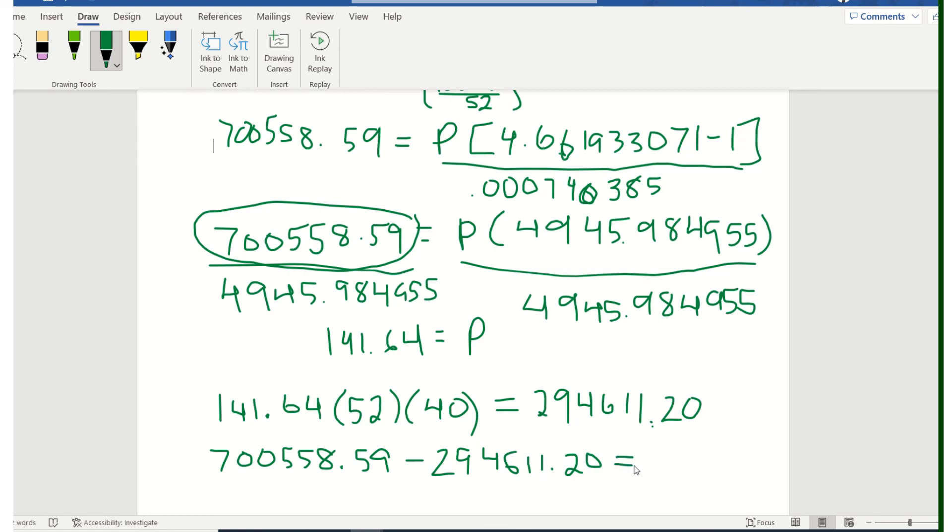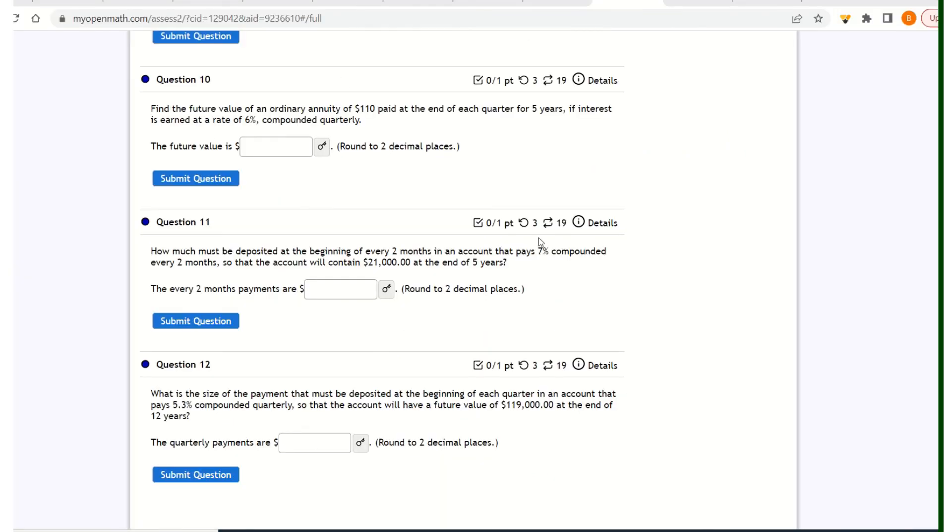So if we subtract those, she will have earned $405,947.39 in interest. And hopefully that will help you to get through these retirement problems. And realize numbers 11 and 12 are like the second half of what we just did. So you only have to do that second formula using the information that's here on 11 and 12.